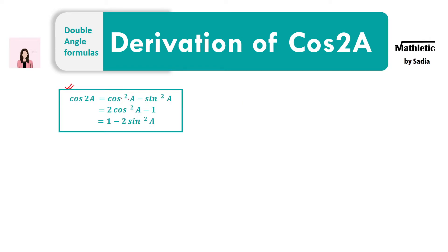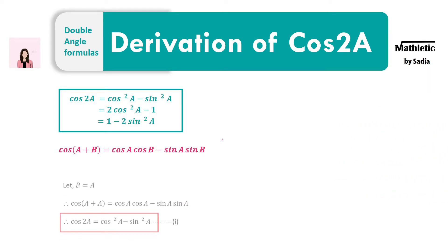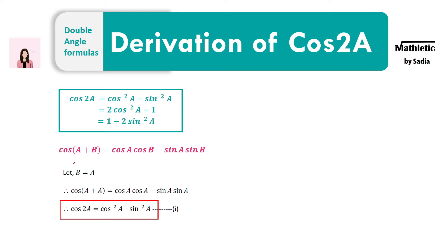These are the three formulas for cos 2a. The first one is based on sine and cos. The second one depends only on cos. And the third one is in terms of sine only. To start with cos 2a, we need help from the compound angle formulas. Cos(a + a) will give us cos 2a. Replacing b by a gives us cos 2a on the left side. Cos a times cos a gives us cos squared a, and sine a times sine a gives us sine squared a. So this is the first formula: cos squared a minus sine squared a.